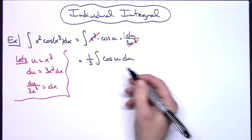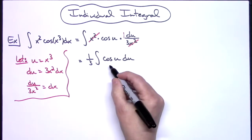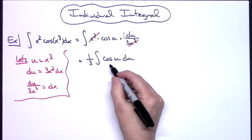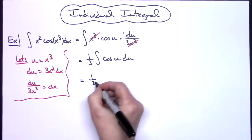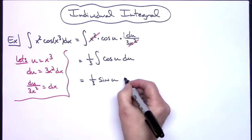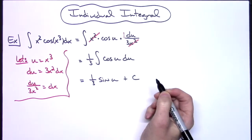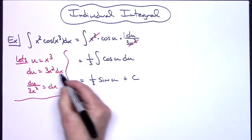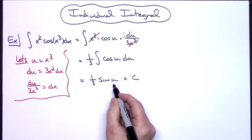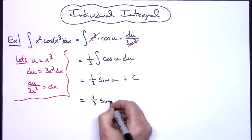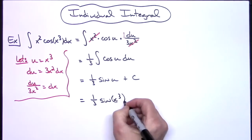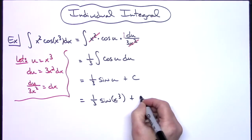We now have one third times the integral of cosine u du. This is a straightforward integral we have memorized — the integral of cosine is sine. So we get one third sine u plus C. The last step is to replace u with x to the third, giving a final answer of one third sine x to the third plus C.